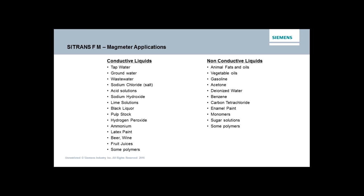This is a cross-section of a mag meter. At the top and the bottom, you have the magnets creating the magnetic field. On the sides, you have the electrodes, which pick up the voltage created by the conductive material. Your magnetic coils create a field going in one direction, and when the conductive material goes through at 90 degrees, it creates a voltage that's picked up by the measuring electrodes.